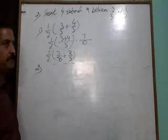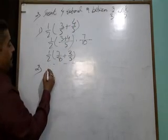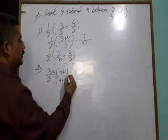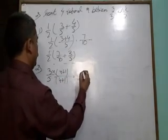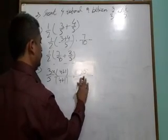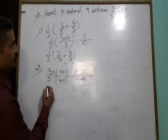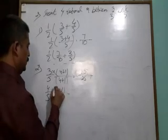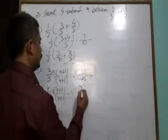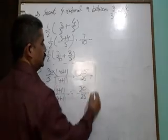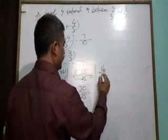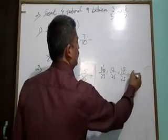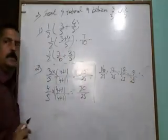Second method: you simply multiply by (n + 1). Means 3/5 times (4 + 1)/(4 + 1) equals 15/25, and 4/5 times (4 + 1)/(4 + 1) equals 20/25. So the numbers are 16/25, 17/25, 18/25, 19/25.